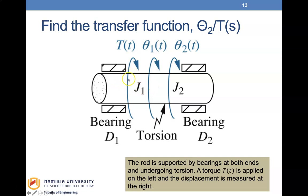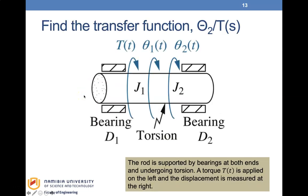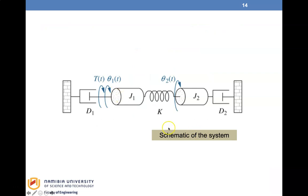Drawing the schematic of the rod, it has both a springing effect between the two sides and a damping effect at the ends from the bearings. The schematic shows D1, J1, K, J2, and D2. The torque is applied on the left side and theta-2 is the output. The transfer function we want is output over input, which will be K over delta in block diagram form.